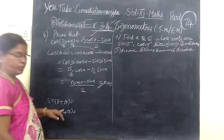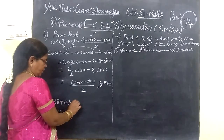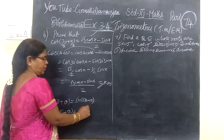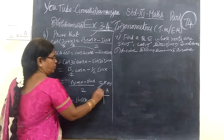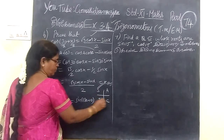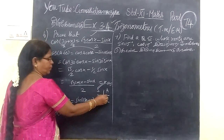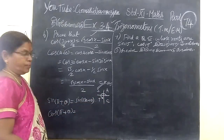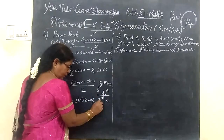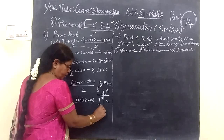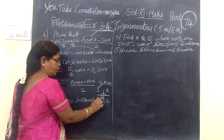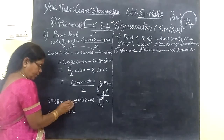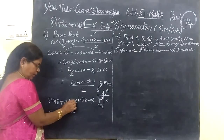Next we are going to apply cos(180 plus θ). Now 180 degrees plus θ is coming in the third quadrant. In the third quadrant, tan is positive. All other ratios are negative — that is negative. So this is what we are contemplating.